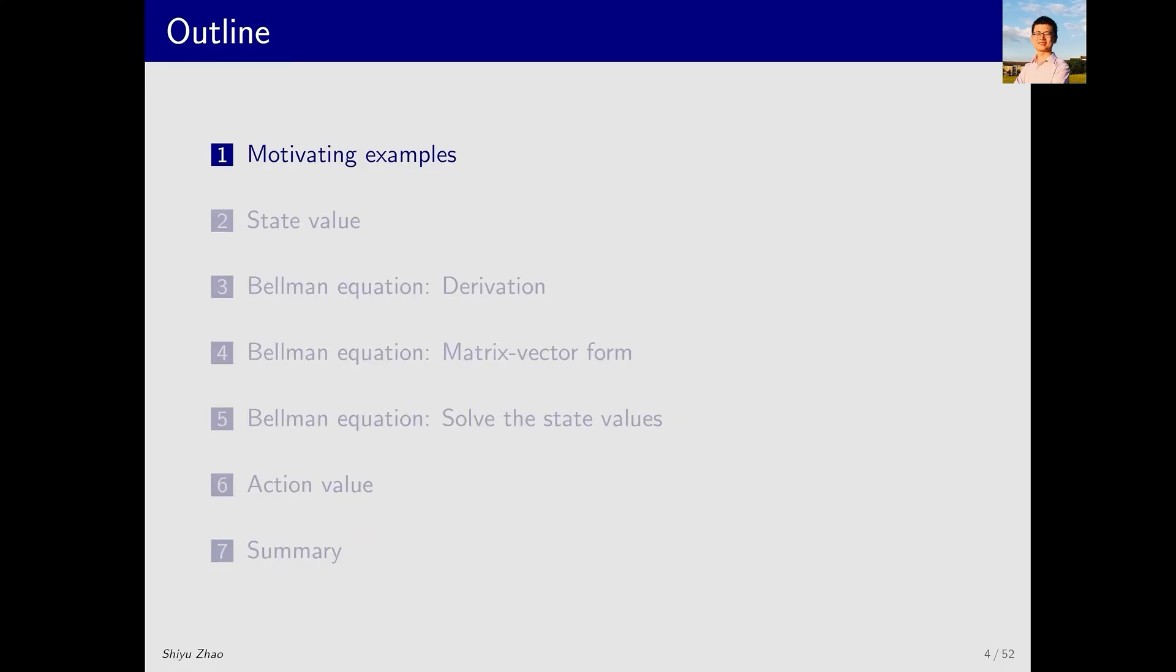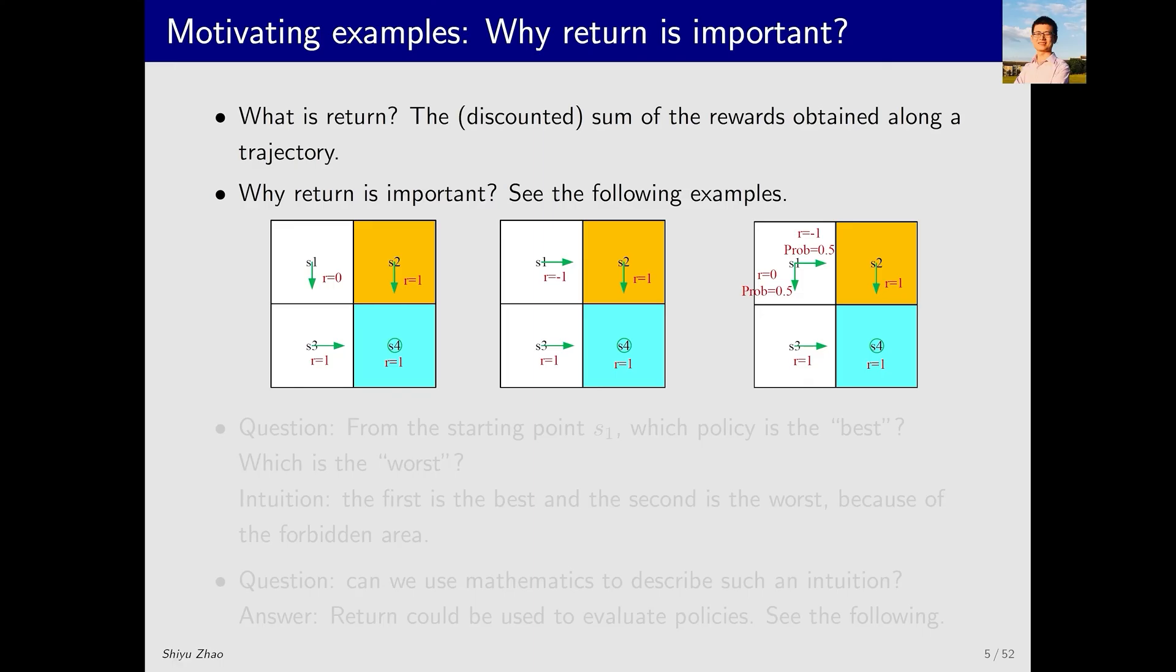We begin with a few examples. The first example aims to demonstrate why the concept of return is important. This is a concept we introduced in the last lecture. Let's revisit it. A return, or discounted return, is the sum of rewards obtained along a trajectory, adjusted by discount rate.